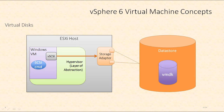So Windows, or whatever our guest operating system is, needs to see what it believes is storage hardware. We'll trick our guest operating system by providing it drivers for a virtual SCSI controller. In this case, we have a Windows VM, and when Windows needs to read or write data, it's going to issue SCSI commands. Those SCSI commands will be sent to the virtual SCSI controller.